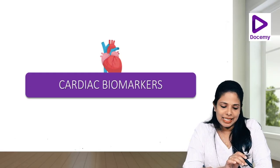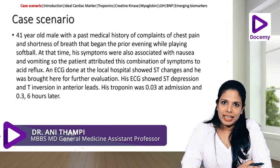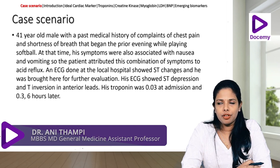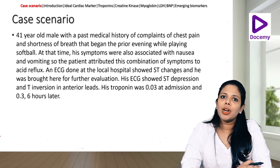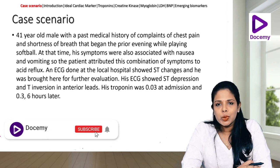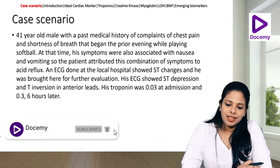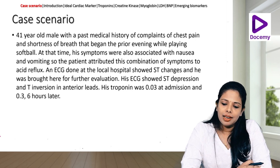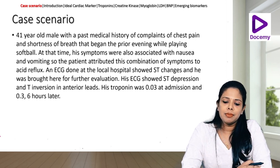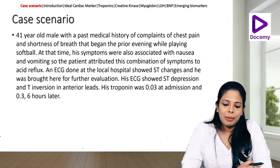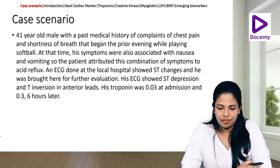Coming to our case scenario, we have a 41-year-old male patient with a past medical history of recurrent chest pains, now presenting with acute onset chest pain associated with shortness of breath that began the prior evening while playing softball. His symptoms were also associated with nausea and vomiting, and the patient attributed this combination of symptoms to acid reflux.